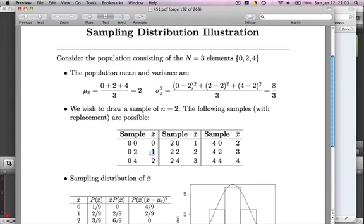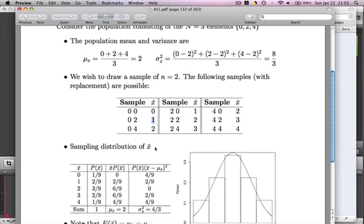And we can think about the distribution of these x bars since it's a random quantity. Mu and sigma don't have distributions because they're fixed parameters. X bar does. Since it varies, it depends on this random thing, which is which two people I happen to call, which two people came into the sample.